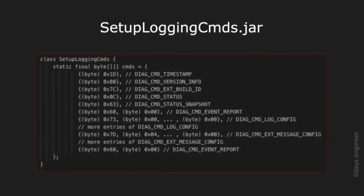Here is the annotated snippet of the block of DIAC commands from SnoopSnitch. This block consists of three large logical parts. The first part is largely irrelevant — a bunch of commands requesting various information from the baseband such as timestamp, version info, and build ID. The second batch starts with command number 0x73 hexadecimal — DIACommandLogConfig — which enables and configures protocol dumps. The third part starts with command number 0x7D hexadecimal — DIACommandXMessageConfig — which is supposed to enable textual message logging, except that in SnoopSnitch's case it disables all logging altogether.